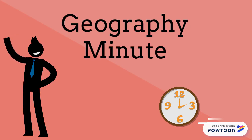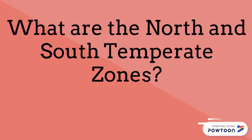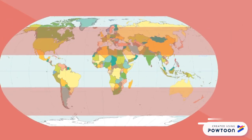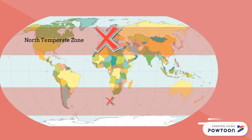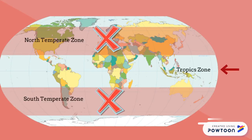Your Geography Minute. What are the North and South Temperate Zones? In geography, temperate latitudes of Earth lie between the tropics and the polar regions.